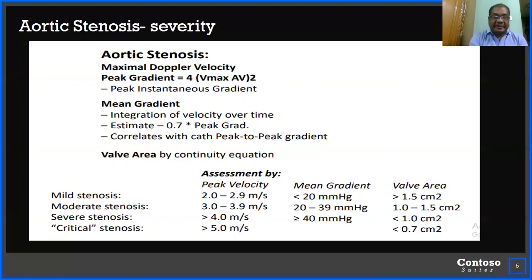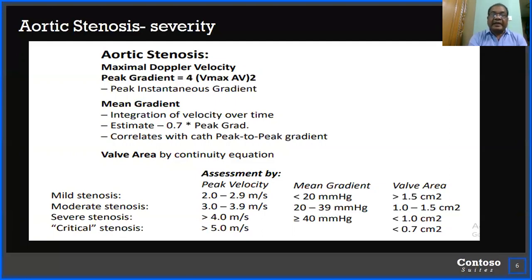Aortic stenosis categories: mild stenosis has peak velocity 2–2.9 m/s, gradient less than 20 mmHg, and valve area greater than 1.5 cm². Moderate stenosis has peak velocity 3–3.9 m/s, gradient 20–39 mmHg, and valve area 1.0–1.5 cm². Severe stenosis has peak velocity greater than 4 m/s, gradient ≥40 mmHg, and valve area less than 1.0 cm². Critical stenosis has peak velocity greater than 5 m/s and valve area less than 0.7 cm².